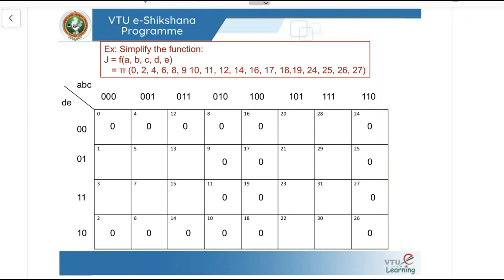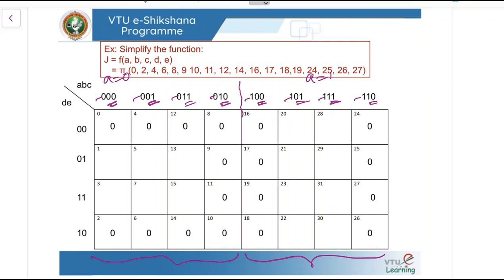The structure of the K-map is the same as studied for the min term expression. It consists of two 4-variable K-maps: the first 4-variable K-map where A equals 0, and the second where A equals 1. Both sides use Gray code 00, 01, 10, 11 for BC and DE respectively. Since it is a 5-variable K-map, we get 32 cells — that is 2 to the power of 5 — with decimal equivalents from 0 to 31.